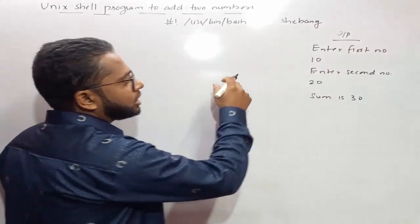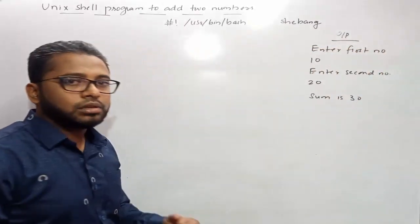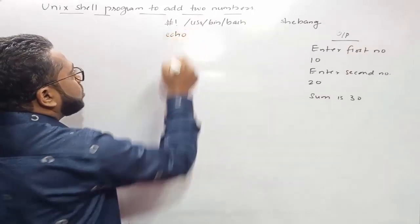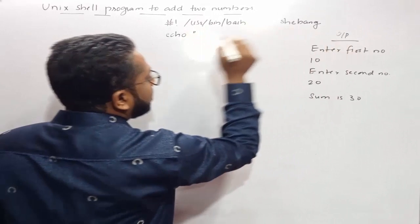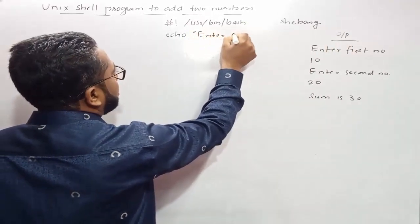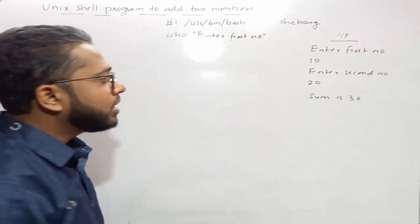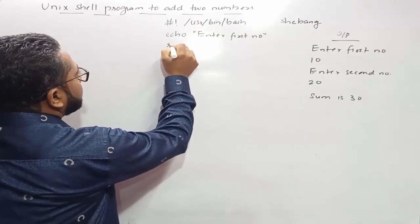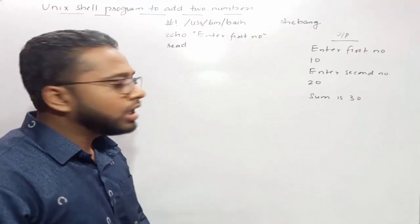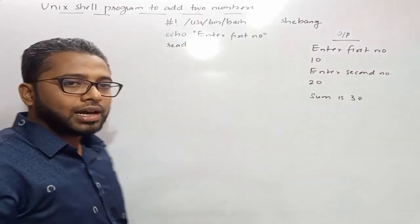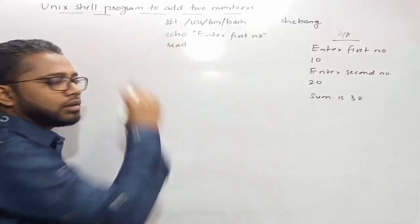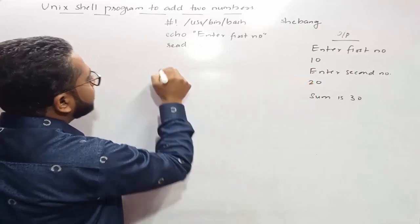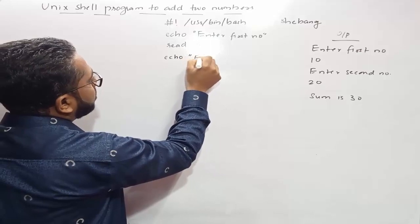When the program asks the user to enter the first number, we are displaying a message. In Unix shell scripting, we display a message using the echo command: echo "Enter first number". Then to accept the user's input and store it in a variable, we use the read command: read a. Here, a is the variable and read is the command that accepts the value and stores it inside variable a.